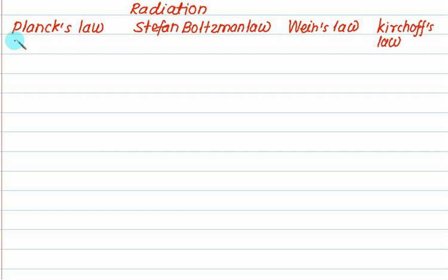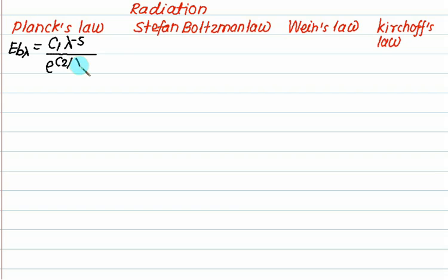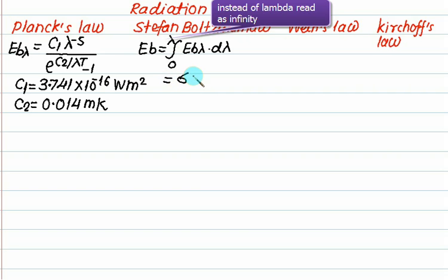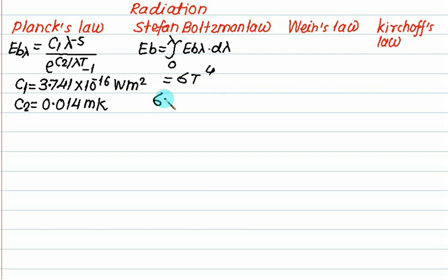Radiation is basically based on four laws. One is called Planck's law, second is called Stefan-Boltzmann law, third is Wien's law, and the fourth is Kirchhoff's law. Planck's law gives you the monochromatic emissive power: Eb_lambda equals C1 times lambda to the power minus 5, divided by (e to the power C2 by lambda T, minus 1). Stefan-Boltzmann's law gives the total emissive power of a black body, obtained by integrating Eb_lambda d_lambda from 0 to infinity, and is given by sigma times T to the power 4, where sigma is the Stefan-Boltzmann constant.